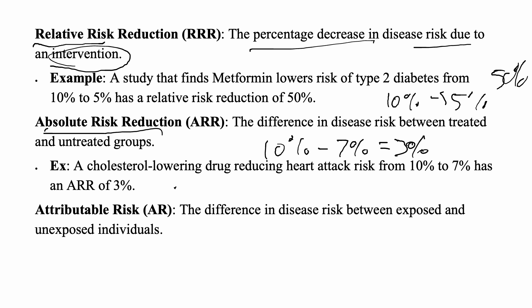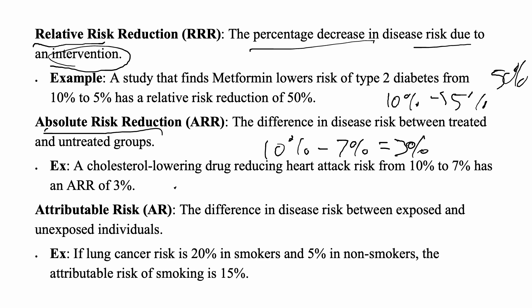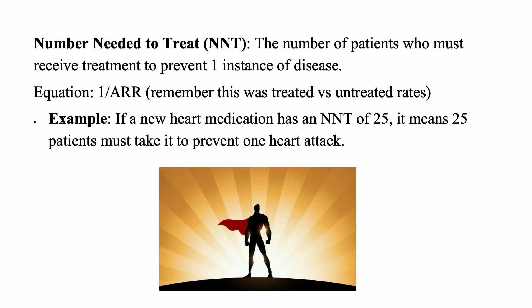Attributable risk is the difference in disease risk between an exposed group and an unexposed group. For example, if lung cancer risk is 20% in smokers and 5% in non-smokers, the attributable risk of smoking is 15% — you're comparing the exposed group to a baseline incidence rate, so 20% minus 5% equals 15%.